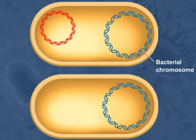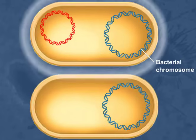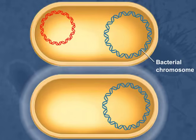Bacterial conjugation is a process of genetic transfer between bacterial cells that requires direct contact between the cells. Many, but not all, species of bacteria can conjugate. Conjugation can occur between cells of the same species or even between cells of two different species.